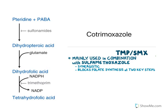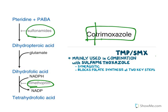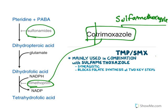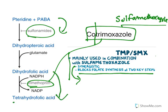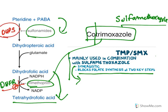After sulfonamides, there is a combination drug called cotrimoxazole — a combination of trimethoprim and sulfamethoxazole. 'Co' means combination, 'tri' refers to trimethoprim, and the other component is sulfamethoxazole. This combination is known as a sequential combination used for its synergistic action. It blocks folate synthesis at two key steps: dihydropteroate synthase is inhibited by sulfonamide, and dihydrofolate reductase — which converts dihydrofolic acid to tetrahydrofolic acid — is inhibited by trimethoprim.